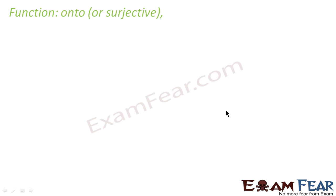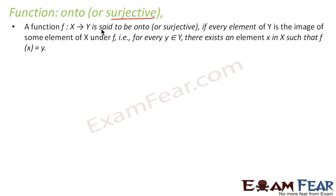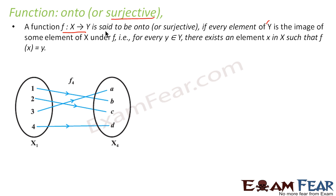Now let's understand the onto function. Onto function is also called surjective function — I'll give a memory tip for that. Onto function: given a function X to Y, it is called onto if every element of Y is the image of some element of X, that is, there is no orphan Y element.